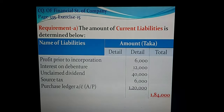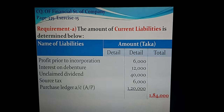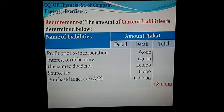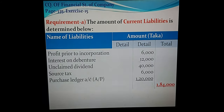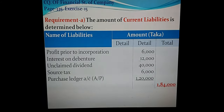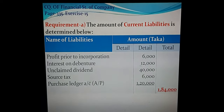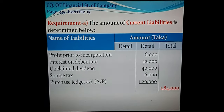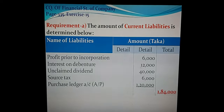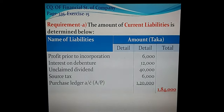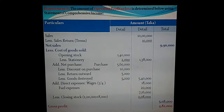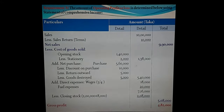The total amount of current liabilities is Taka 1,84,000. I think you have written requirement A in your copy. Now we can start requirement B.